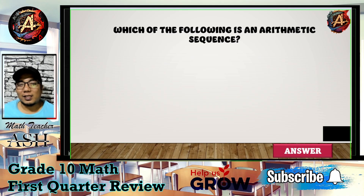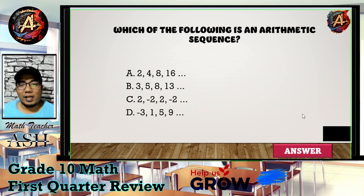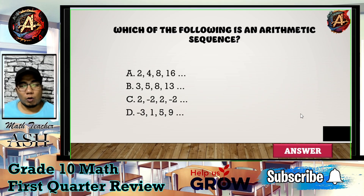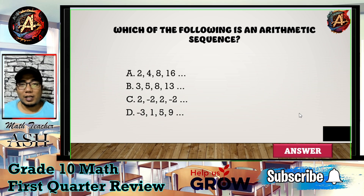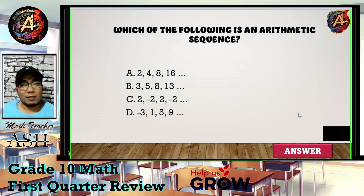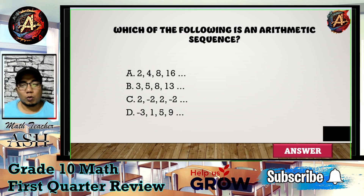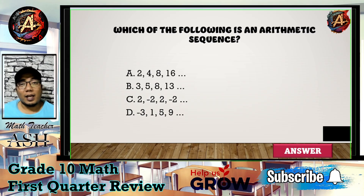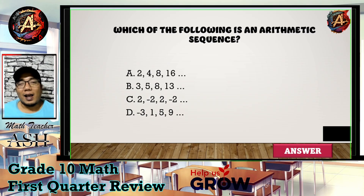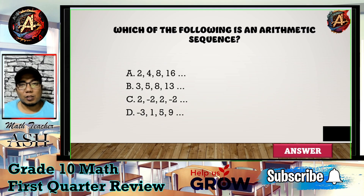Question number five: Which of the following is an arithmetic sequence? Is it A) 2, 4, 8, 16..., B) 3, 5, 8, 13..., C) 2, -2, 2, -2..., or D) -3, 1, 5, 9...? I'll give you 5 seconds to think about your answer.